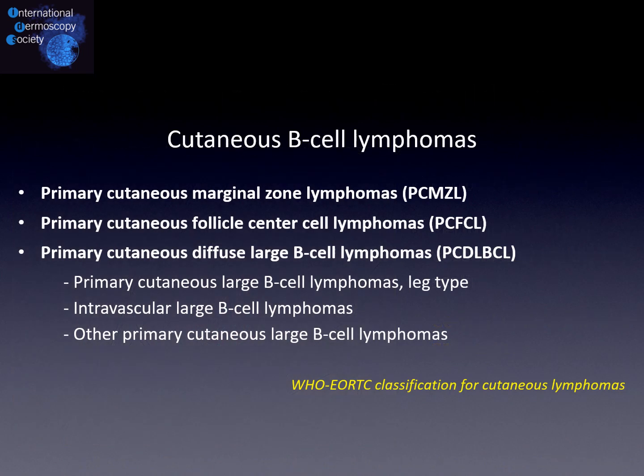Now let's move to cutaneous B cell lymphomas. As you can see, we have three main categories: primary cutaneous marginal zone lymphomas, primary cutaneous follicle center cell lymphomas, and primary cutaneous diffuse large B cell lymphomas. All of these categories have been studied from a dermoscopic point of view.